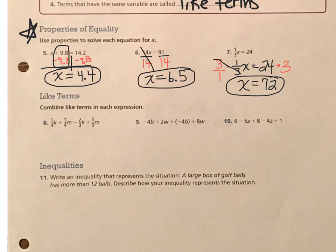So number five says x plus 9.8 equals 14.2. So that's this problem right here. And because there is addition next to the variable x, we are going to solve it by using the inverse operation from addition, which is subtraction.